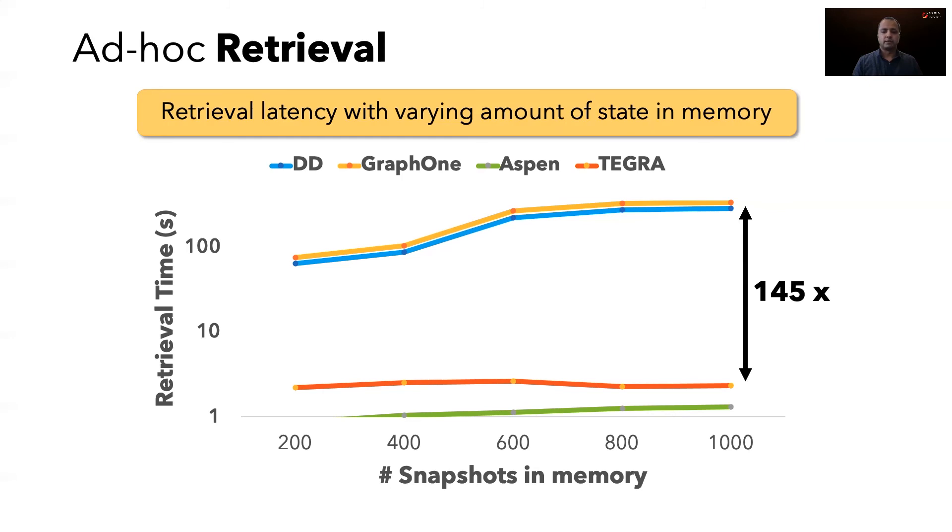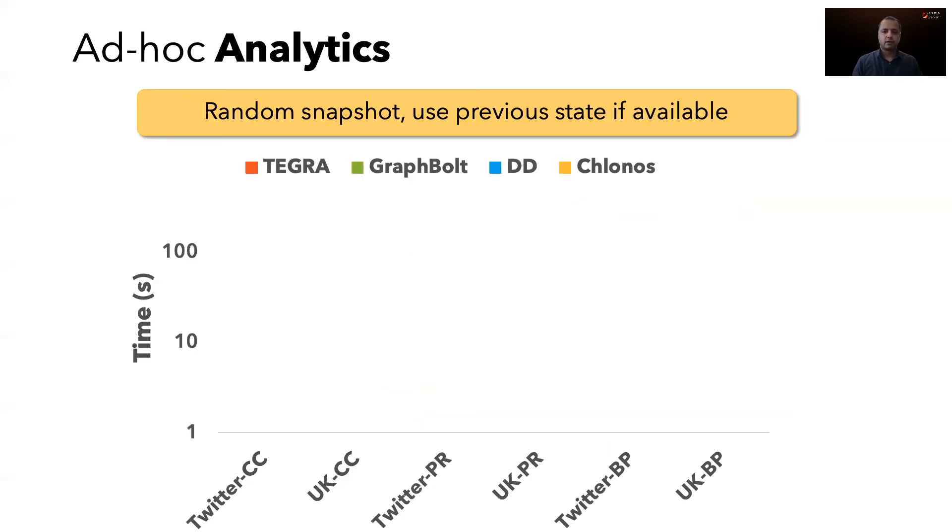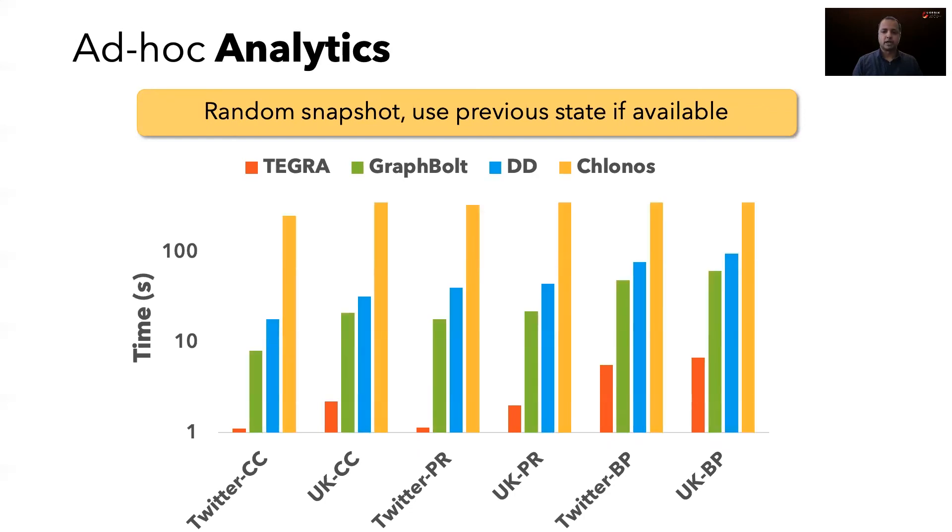The second result evaluates the overall goal of Tegra, the ability to do incremental computations on random snapshots. We assume that the system has been running for some time and enough state has been accumulated. For different graphs and algorithms shown in the x-axis, we retrieve a random snapshot and execute the algorithm. The y-axis in log scale shows the time taken. We see that Tegra is able to use stored state to complete the task in a few seconds. In contrast, the comparison systems are unable to leverage previous state and thus do full computation, making them 8 to 30 times slower.